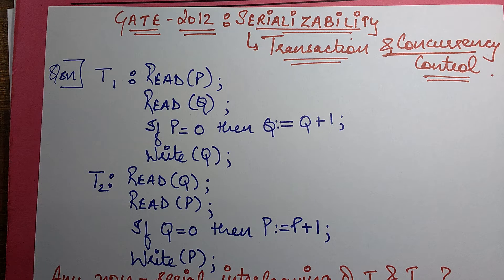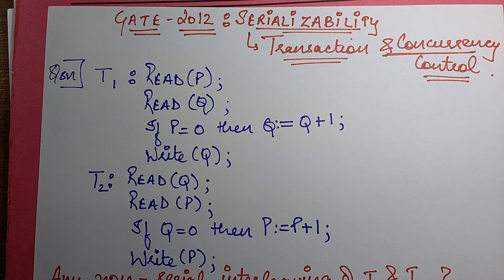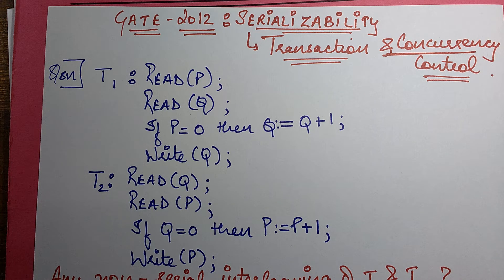But if it were like that, the question should not have come from the topic of transaction and concurrency control, because we know that serial schedules are always the ones which result in a consistent output. So it always results in consistency, and in that case the question of checking serializability should never arise.